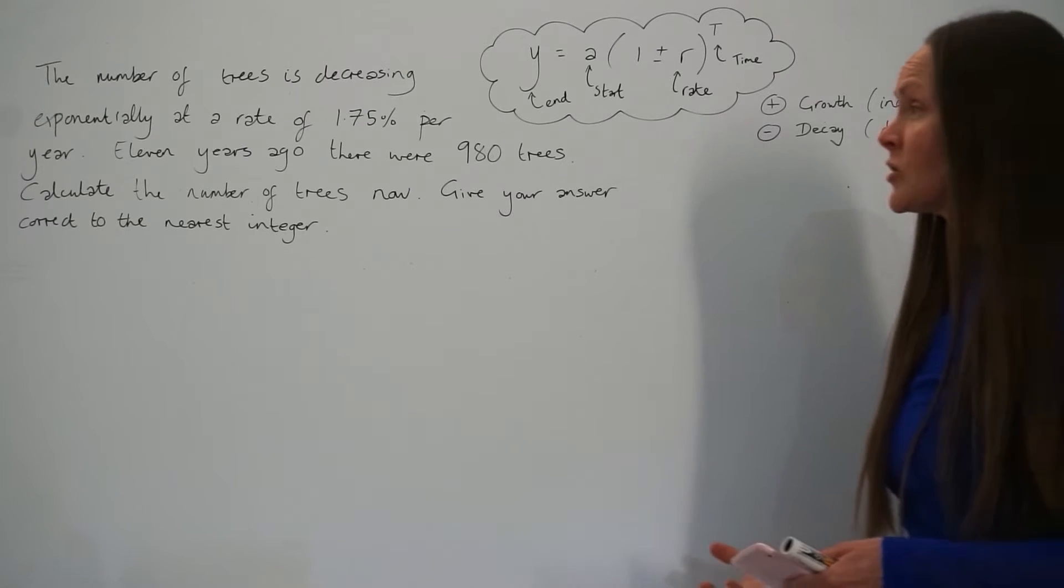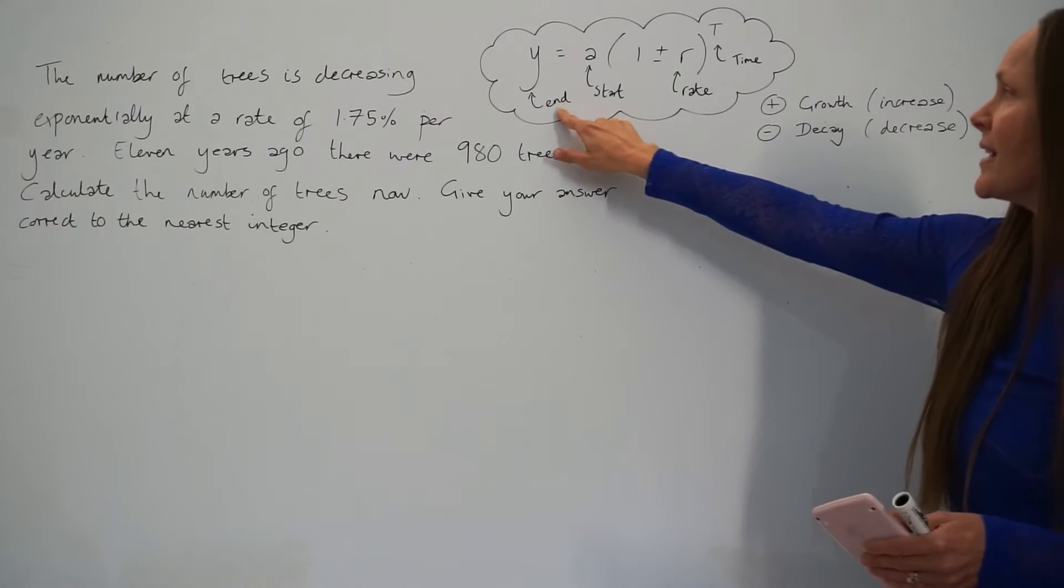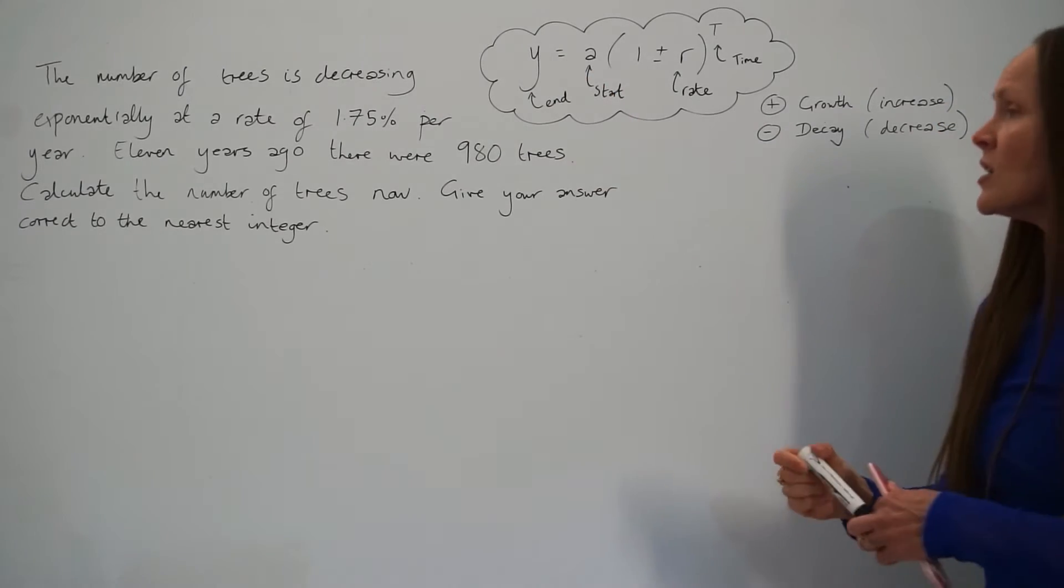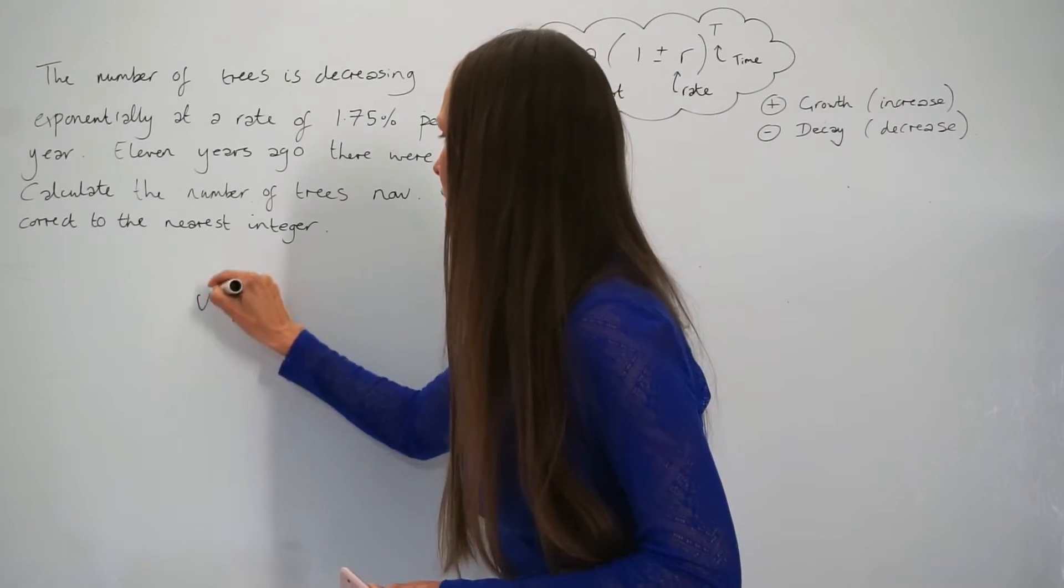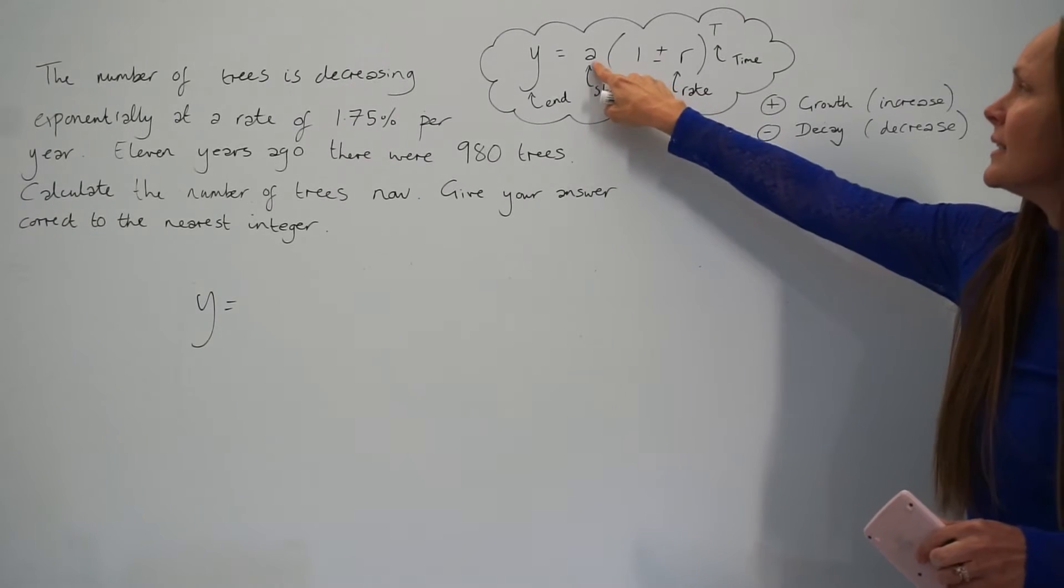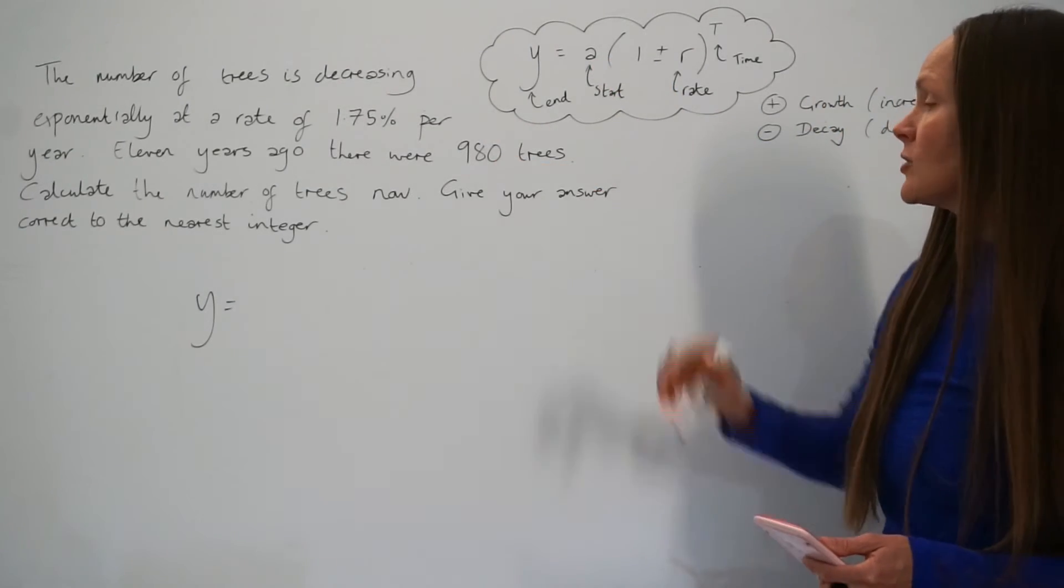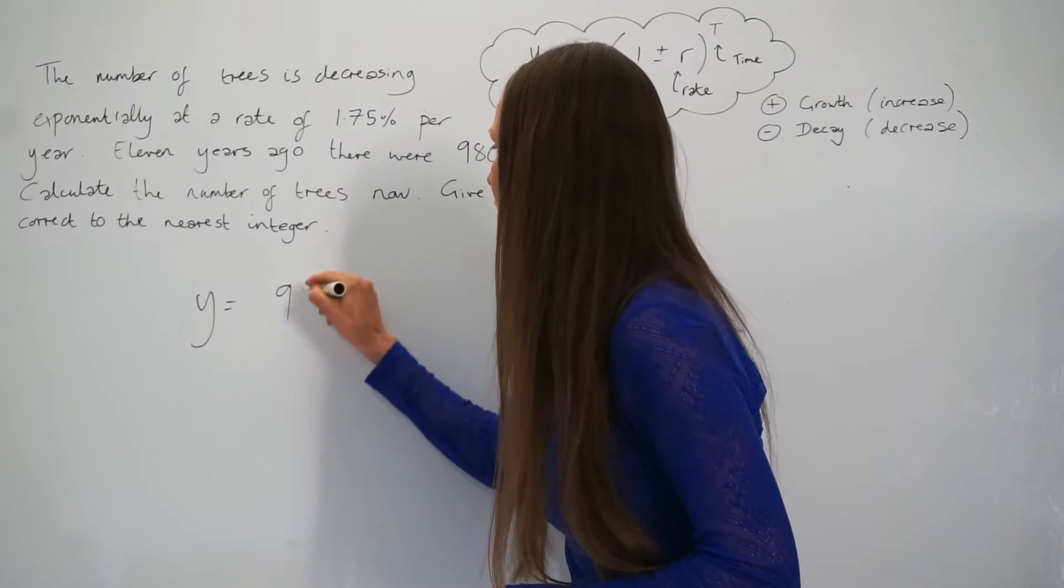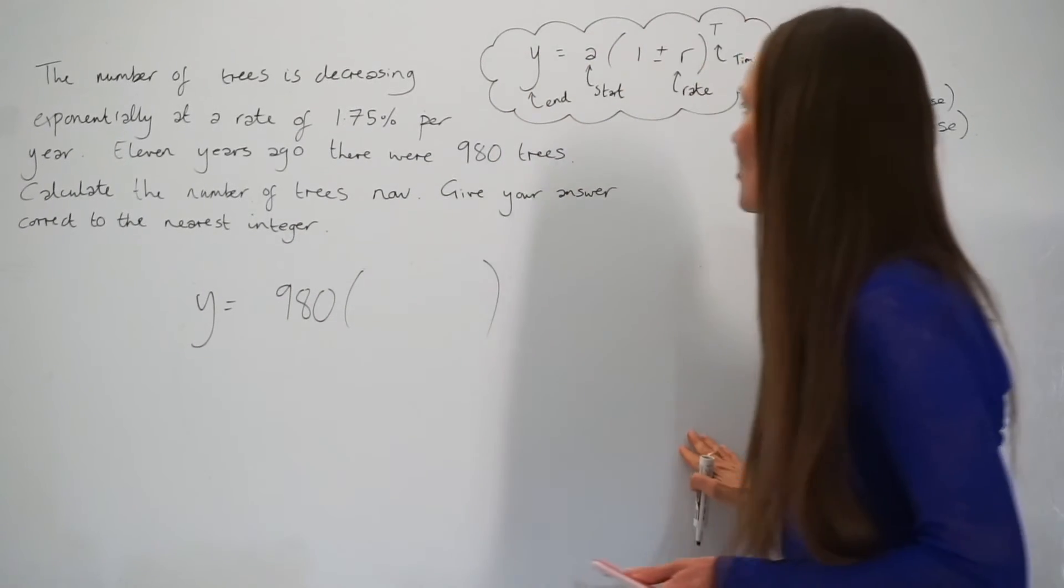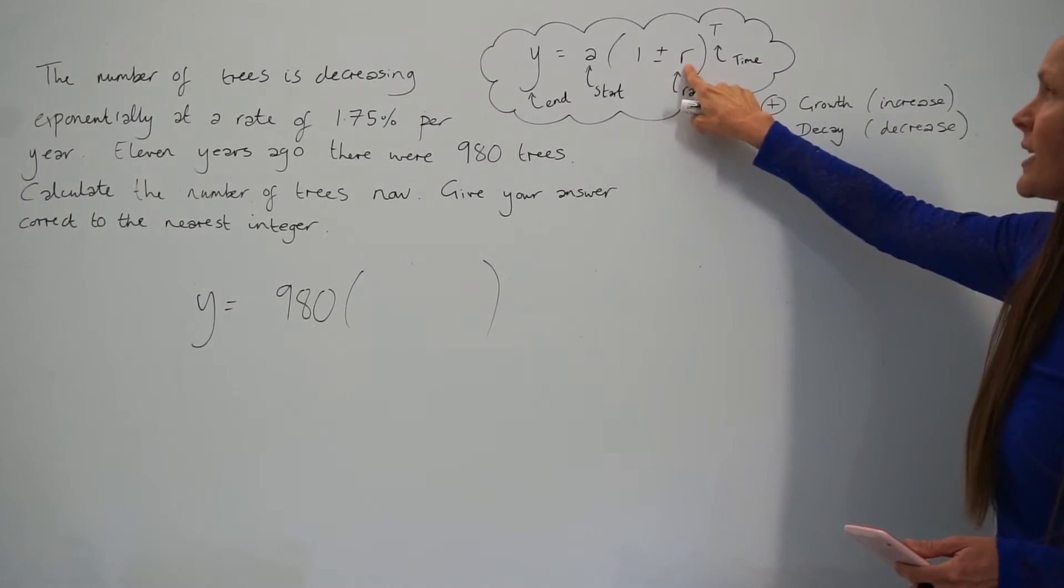So in this first question, we have to calculate the number of trees now. So that's the end value y. So to calculate y, we have to take the start value a, i.e. the number of trees there were 11 years ago, which is 980.